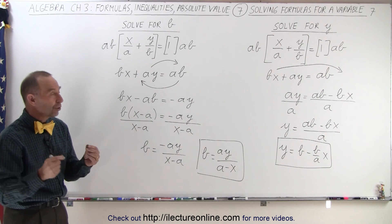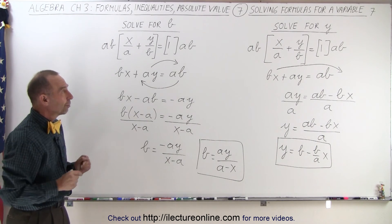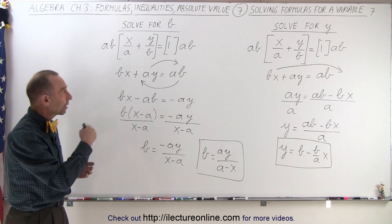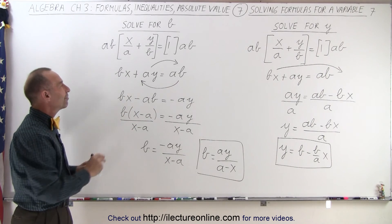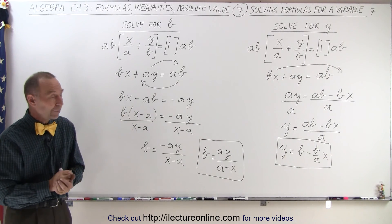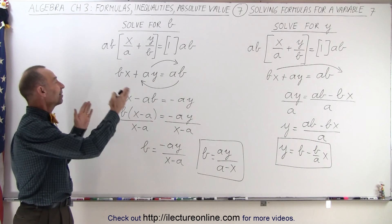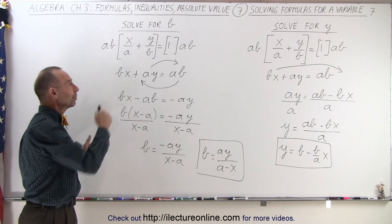But notice, even though we're solving for two separate variables, on the right and the left, we start the problem in the exact same way, get rid of the fractions, by multiplying both sides by the lowest common denominator, and then we isolate the terms that contain the variable we're looking for.